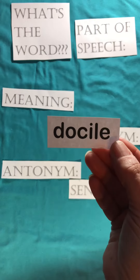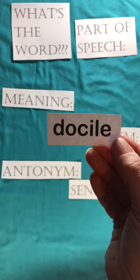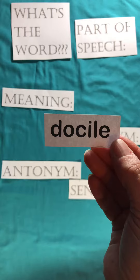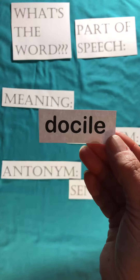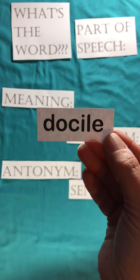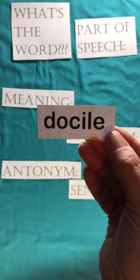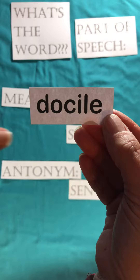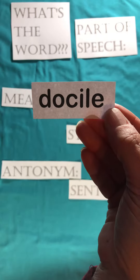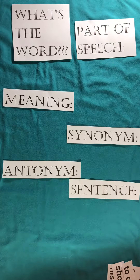Docile. The E makes the I say its name. It starts with a D — we know that because if we're going to draw the D, we would make it from a C into a D. Docile.